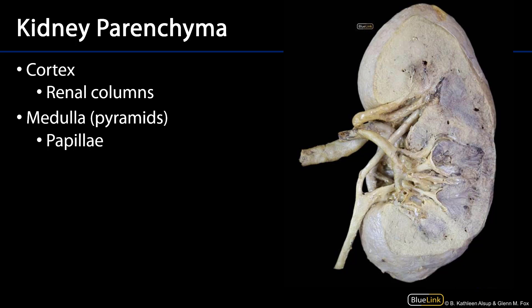Here we can see the kidney has been dissected. The parenchyma is divided into two portions: the cortex and the medulla. The medulla is organized into pyramids. Nephrons will be located between the cortex and the medulla, so within both cortex and medulla. The space between the medullary pyramids is cortex — those are the renal columns. Columns will insinuate themselves between the pyramids.